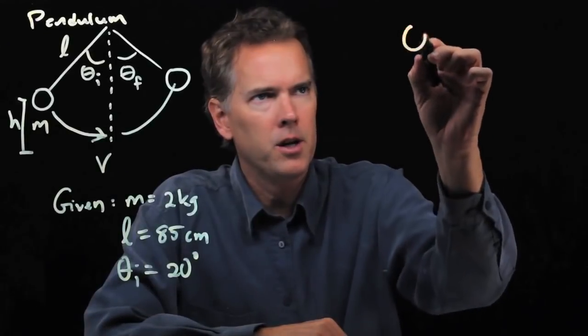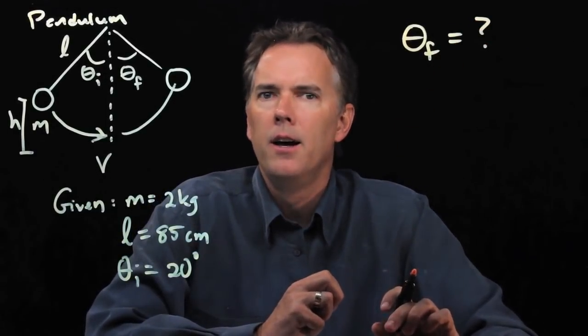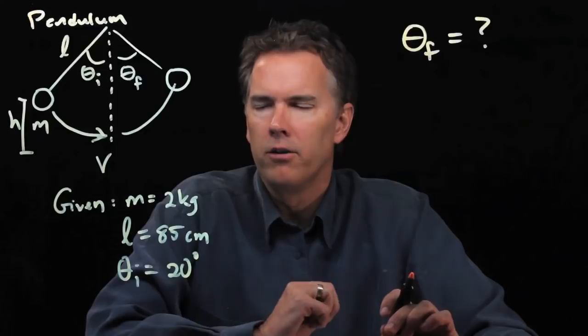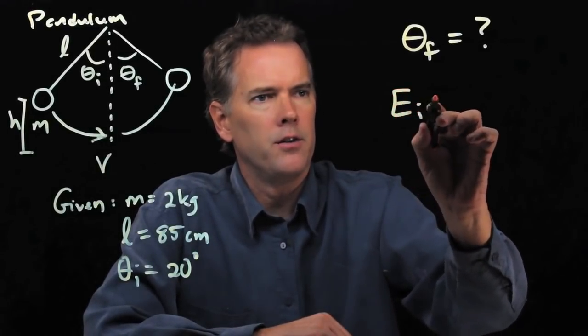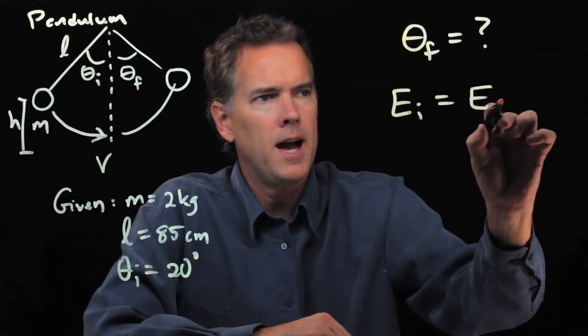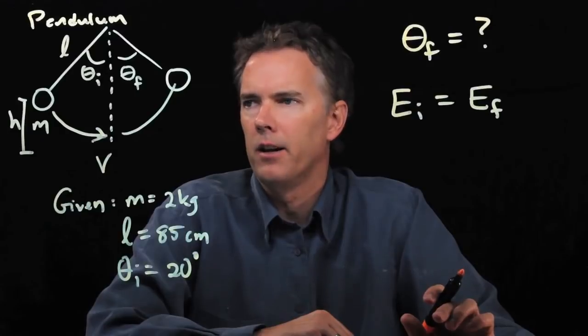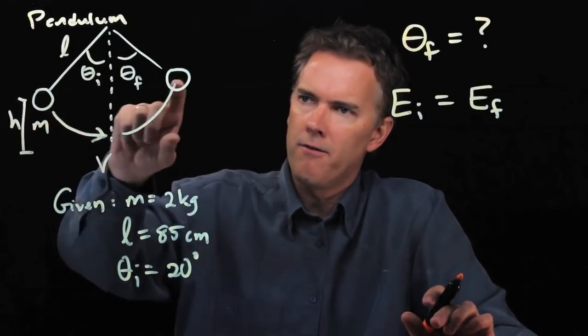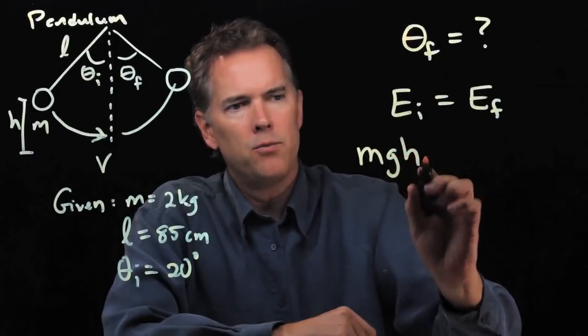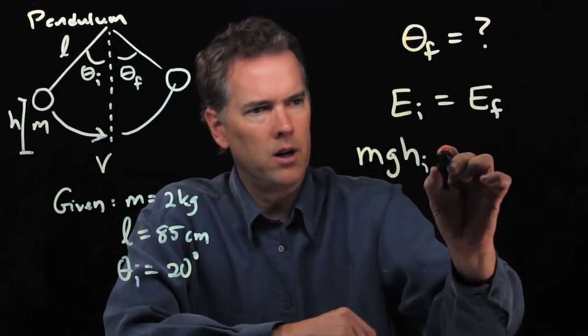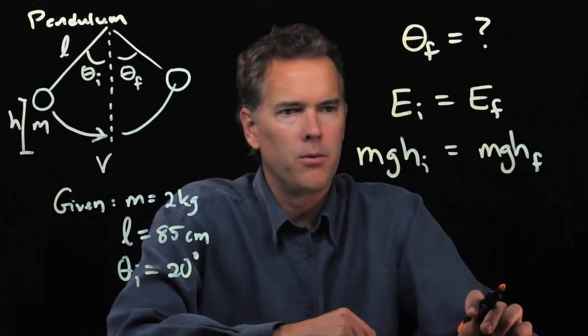By symmetry, earlier we said that theta f must be equal to theta i, but let's see if we can really convince ourselves of that from conservation of energy. Well, energy conservation says whatever energy we have initially has to be whatever energy is there finally. And if our initial position is there and our final position is there, then we just have mgh initial on the left side equals mgh final on the right side.